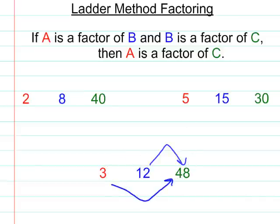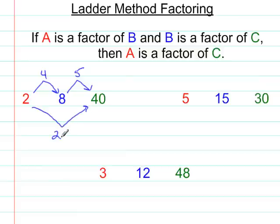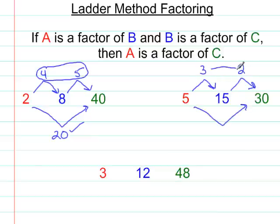Now let's see if we can identify some things about the relationships here. 2 is a factor of 8 and it goes in 4 times. 8 goes into 40 5 times. Then we see that 2 goes into 40 20 times. Well the one thing we want to see is that 4 times 5 is 20. You're going to need to be able to see that relationship to do the ladder method of factoring. Similarly, 5 goes into 15 3 times, 15 goes into 30 2 times. And that means I can be guaranteed to know that 5 goes into 30 3 times 2, 6 times. And it does.